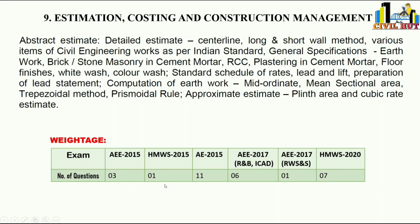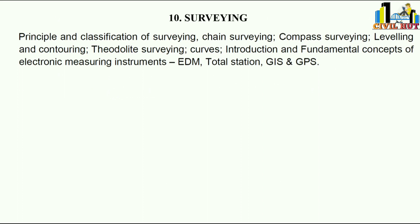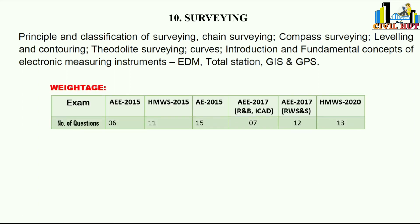Next is Surveying. Topics include chain surveying, compass surveying, leveling, contouring, theodolite surveying, and introduction to electronic measurement instruments — EDM, total station, GIS, GPS, and remote sensing. Historical question counts: 6, 11, 15, 7, 12, 13 — we may get 8–15 questions in the exam. Surveying is important both for the exam and for field purposes.